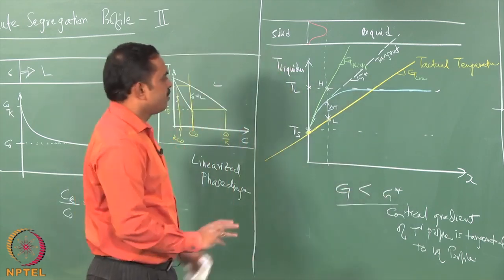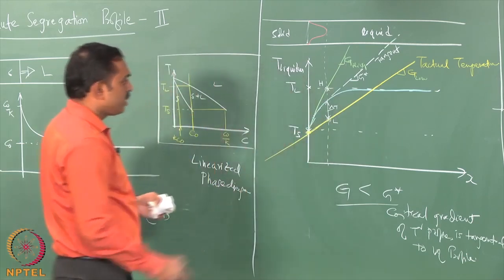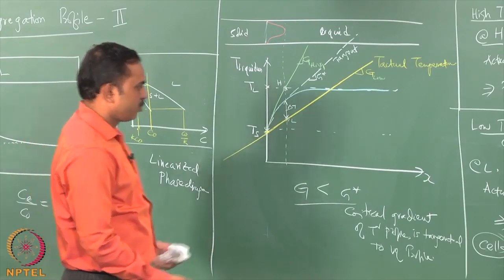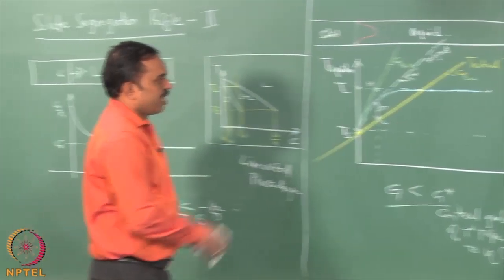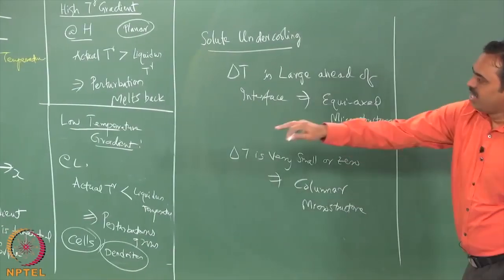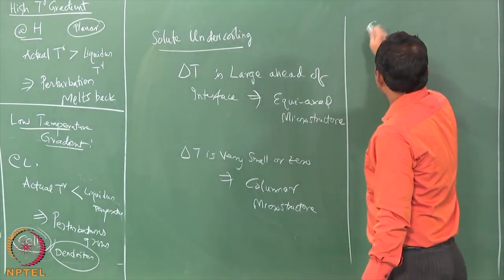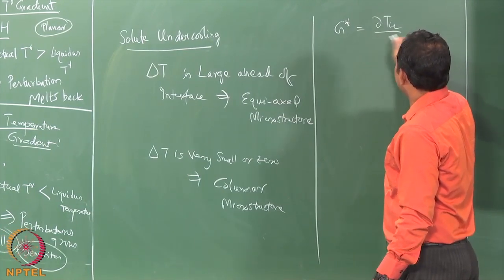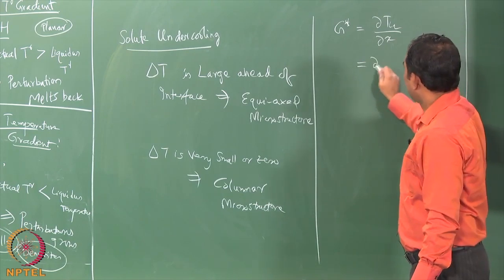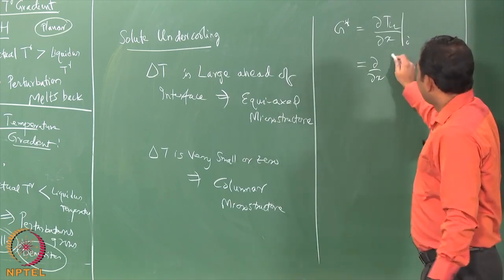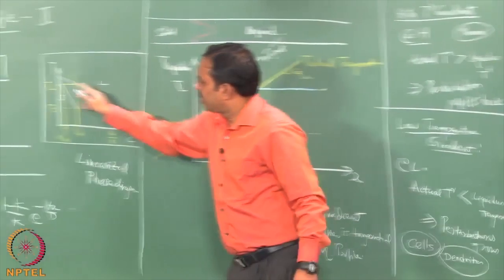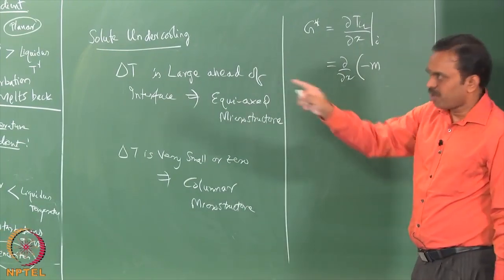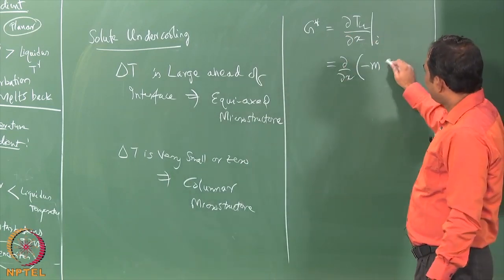So G* is the critical temperature gradient — the liquidus temperature gradient at the interface. T_liquidus at the interface is known from looking up the liquidus temperature from compositions. If the liquidus is a straight line with slope m, and since the liquidus line goes downward it is −m times the composition profile, we can write G* as ∂/∂x (−m · C_L), where C_L = C₀ [1 + (1−k)/k · e^(−Vx/D)], and this is applied at x = 0.